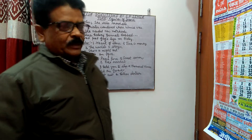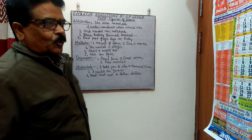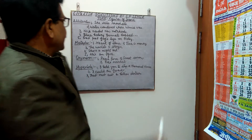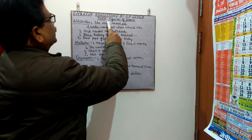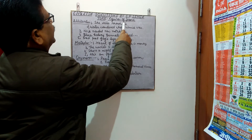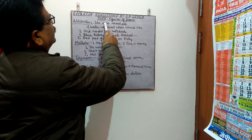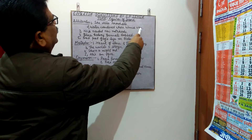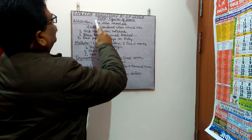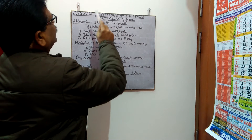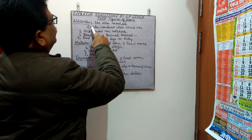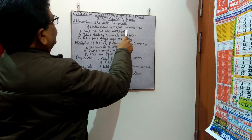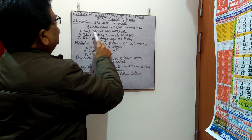Firstly, alliteration. As you know, alliteration is the repetition of consonant sounds. Examples are: 'She sells seashells.' Again, 'She sells seashells.' Next, 'Water wondered where Vinnie was.' In the first line you will find the repetition of the S sound, in the second the repetition of the W sound. Next: 'Nick needed new notebooks.'